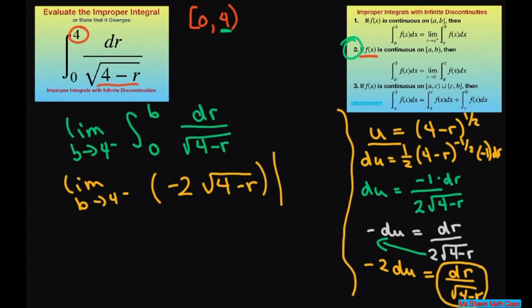Now we're evaluating it from b to 0, or 0 to b. And so let's do that. The limit as b approaches 4 from the left. You substitute in b. We're going to have negative 2 times square root of 4 minus b, and then we have minus negative 2 times square root of 4 minus 0.